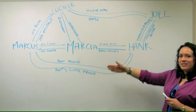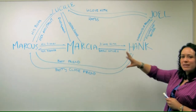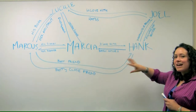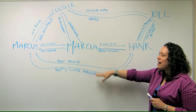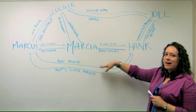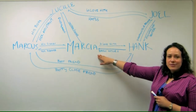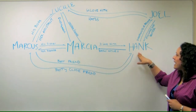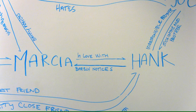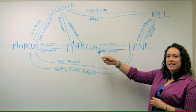So here are your characters. Basically you put them all on the map to start with, and what you want to do is draw arrows where the relationships are. You'll notice, for example, here's Marsha, here's Hank. They have a relationship but there are two arrows because every relationship — every person who knows each other — it's not the same on both sides usually. For example, Marsha's in love with Hank, but Hank barely notices Marsha. So that's what you'd write down for those two.